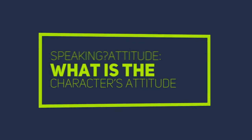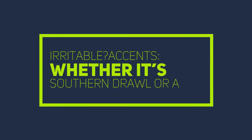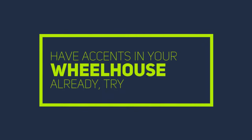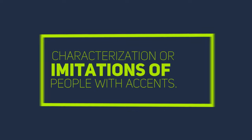Attitude: what is the character's attitude like? Are they usually a happy person, excitable, stressed, or irritable? Accents: whether it's a southern drawl or a jersey guy, accents are fun to play with. If you don't have accents in your wheelhouse already, try characterization or imitations of people with accents.